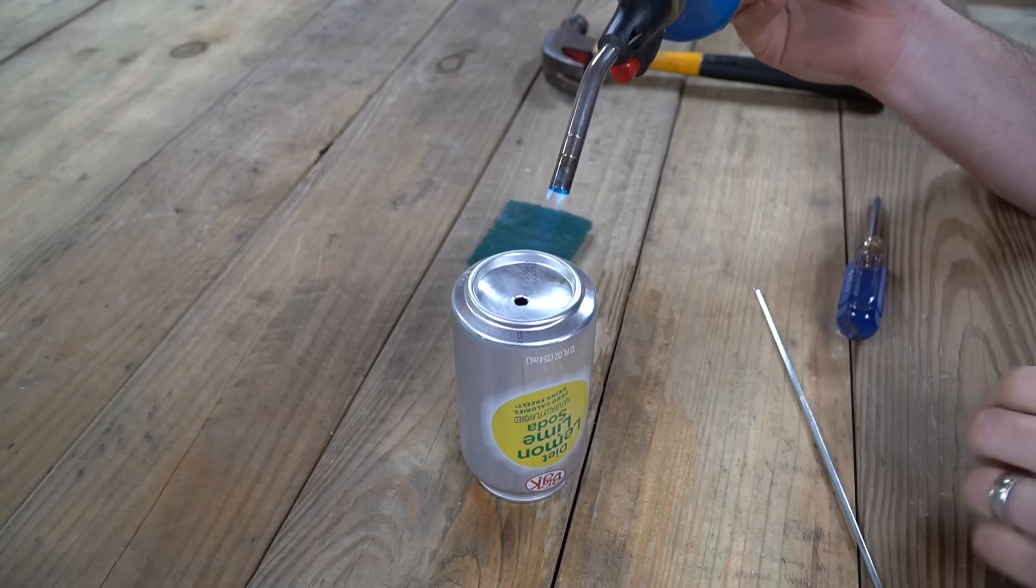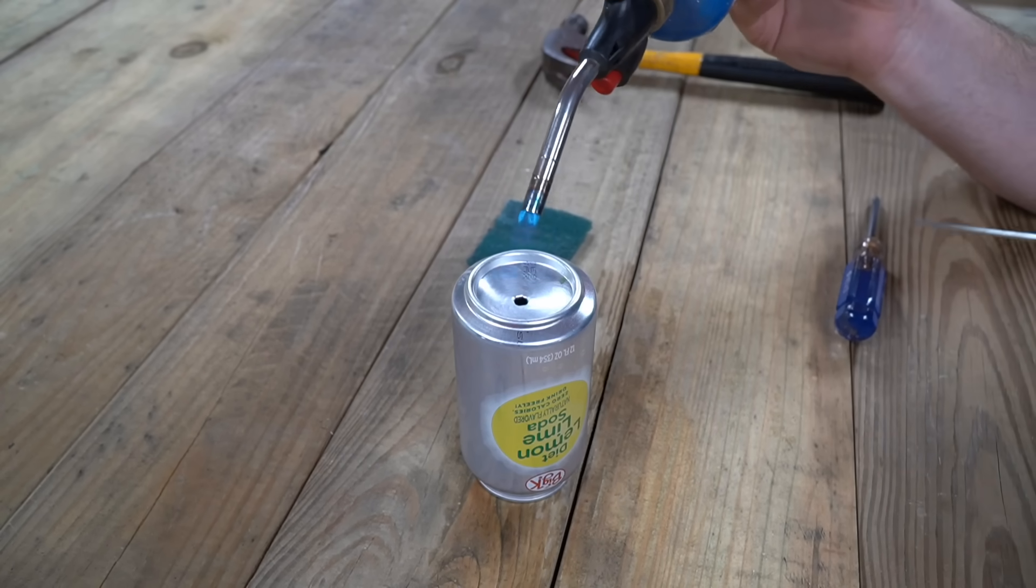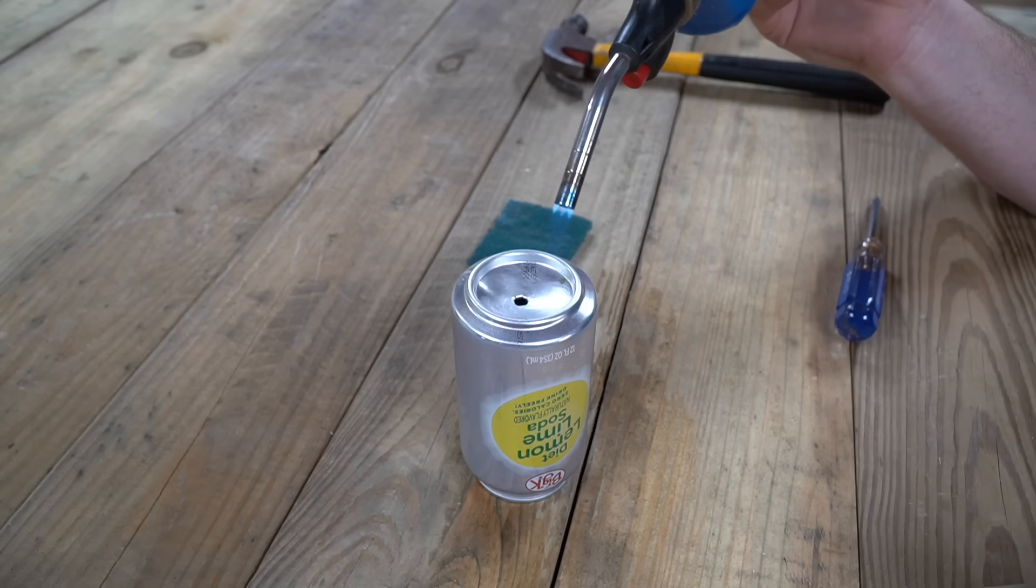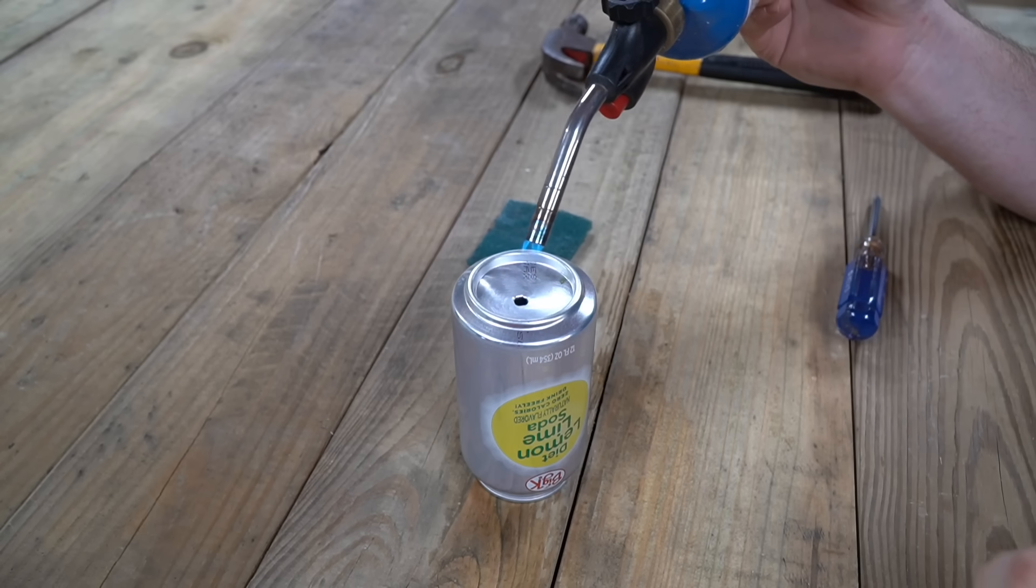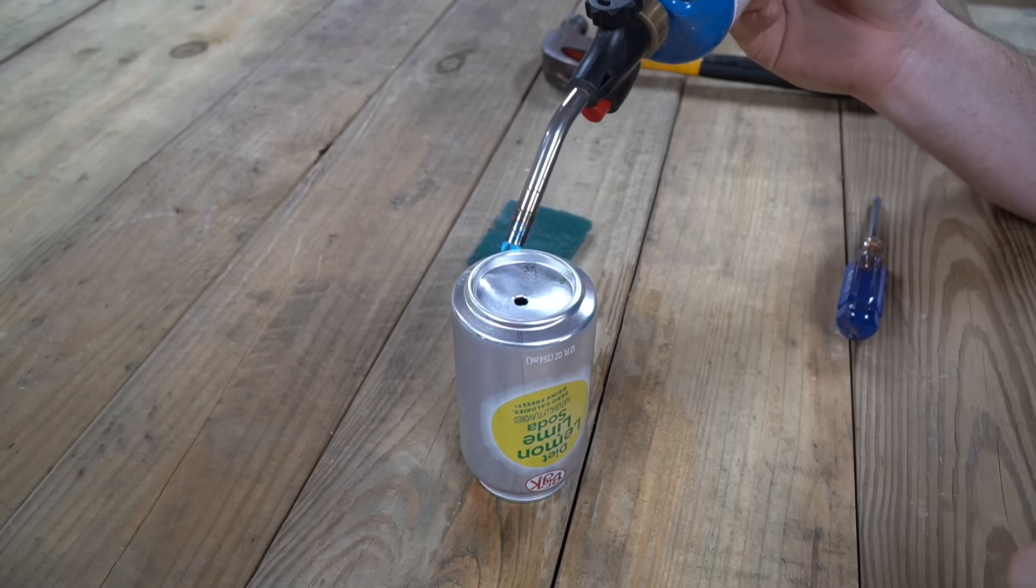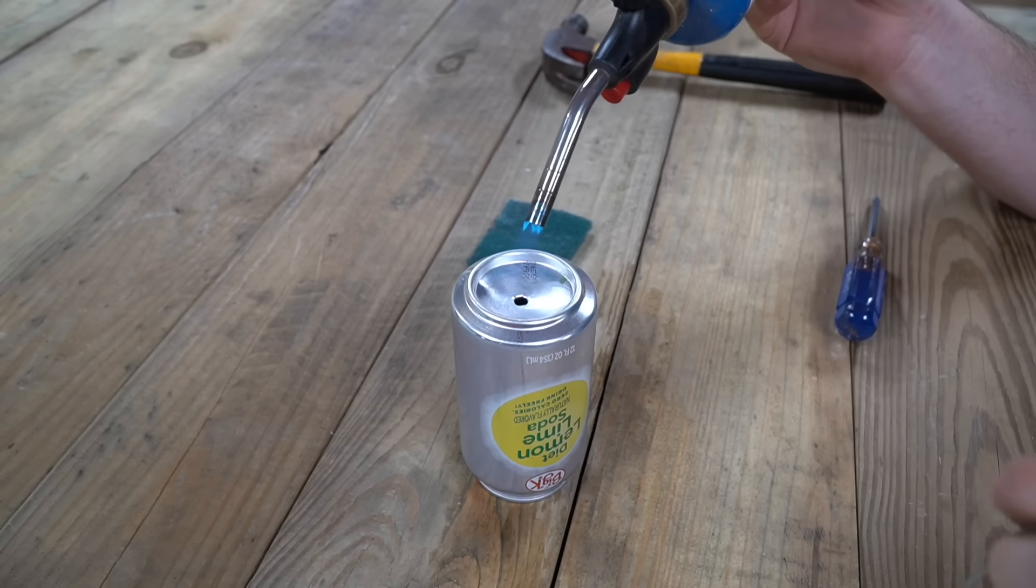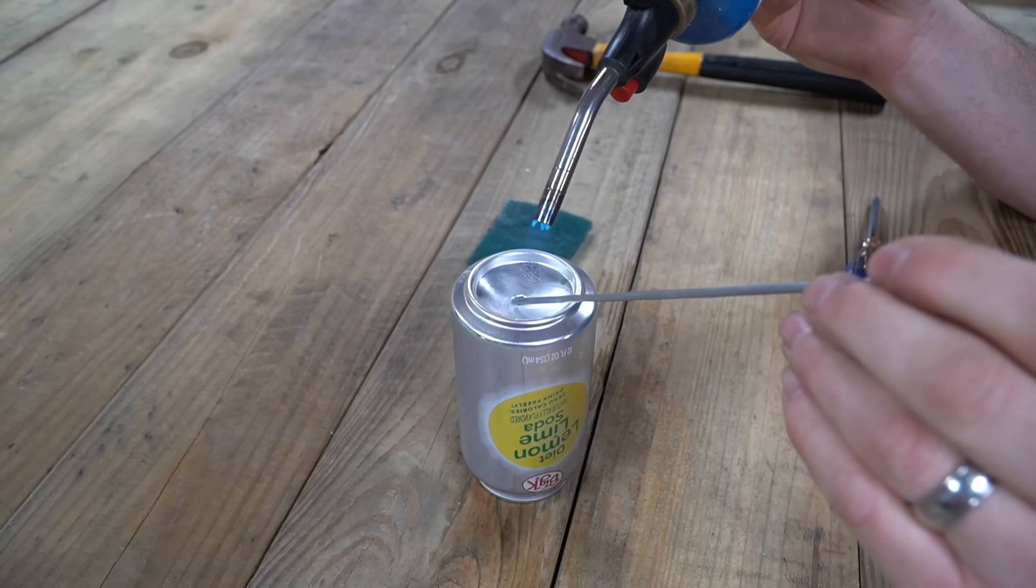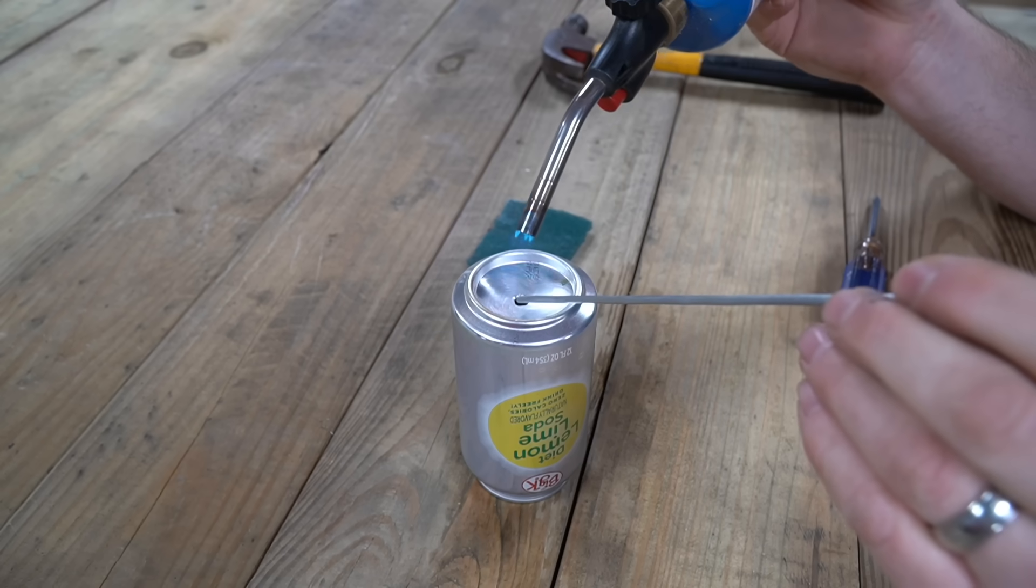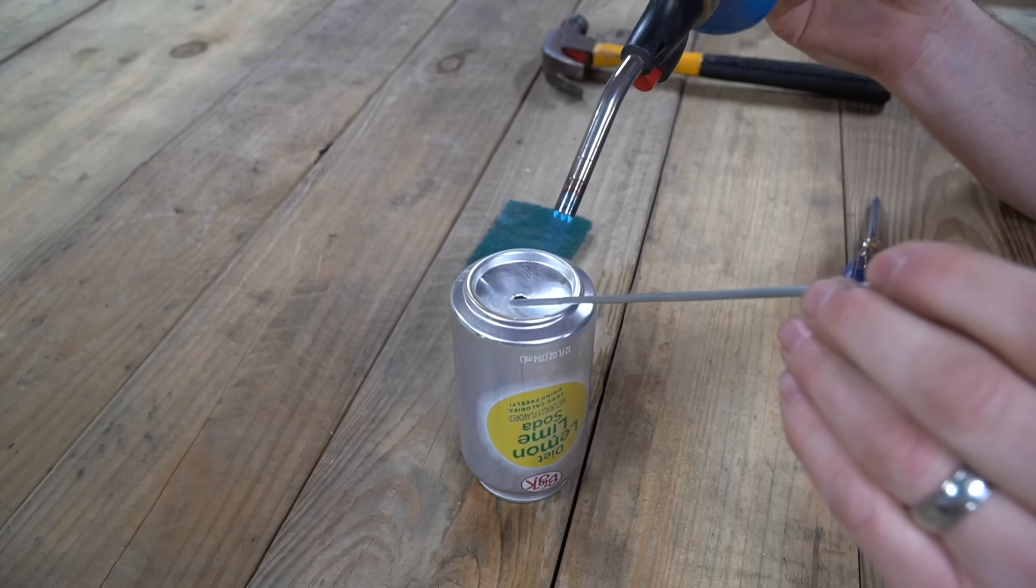Now with the propane torch, you're just going to heat up your part. And again, you want to get this to about 730 degrees. And aluminum pop cans melt really easy. So you need to be careful when you're doing this and then take your brazing rod and see if it'll melt in there yet. And it's not, a little more heat. There we go.